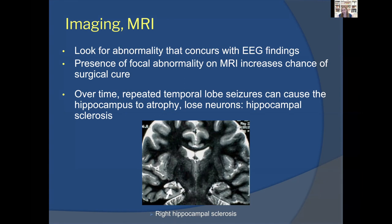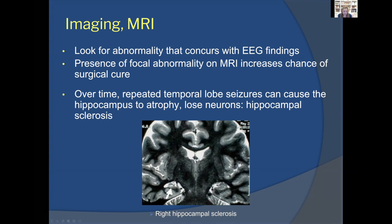Imaging is also very important. We look for an MRI abnormality that concurs with the EEG findings — a focal abnormality that lines up with EEG gives a much better chance at surgical cure. For temporal lobe epilepsy, repeated seizures over time can cause the hippocampus to atrophy and lose neurons, a condition called hippocampal sclerosis. On MRI, an affected hippocampus looks smaller with altered signal intensity and an enlarged surrounding ventricle compared to the normal side, indicating that side has likely been exposed to frequent seizures over time.